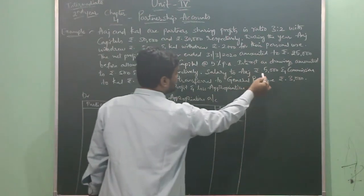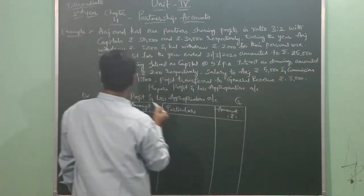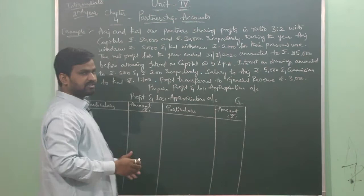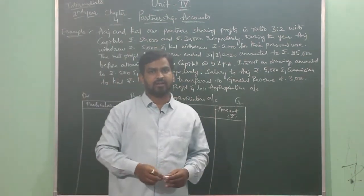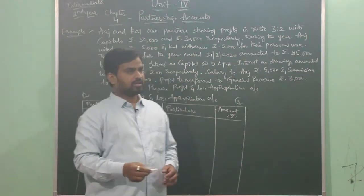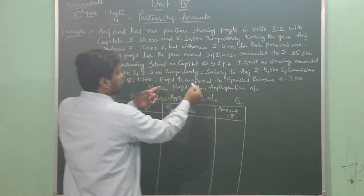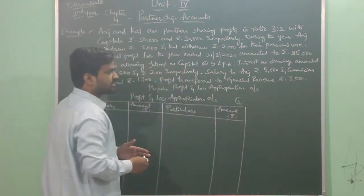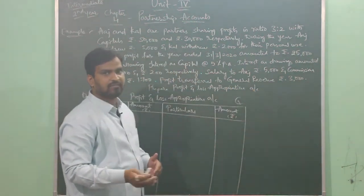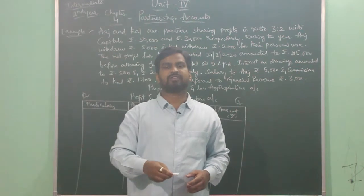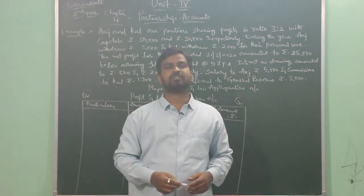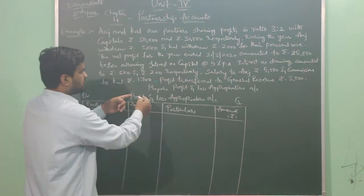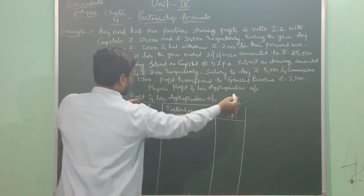Salary to Aaj is rupees 5,000 and commission to Kull is rupees 1,700. So in the business, we are paying Aaj a salary and Kull a commission. Next, the profit transfer to General Reserves is rupees 3,000 — so from the profit remaining after all the adjustments, 3,000 will be transferred to General Reserves. So prepare the Profit and Loss Appropriation Account.